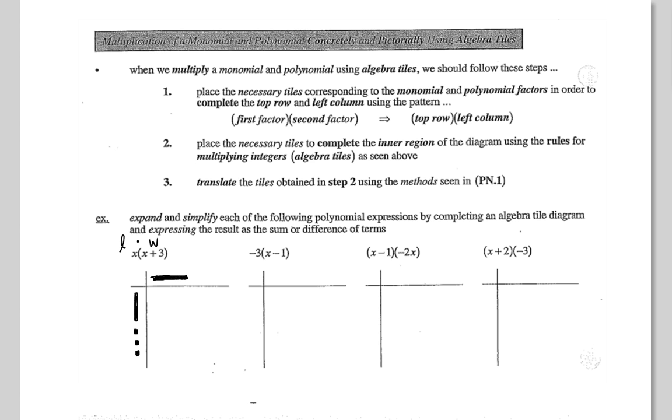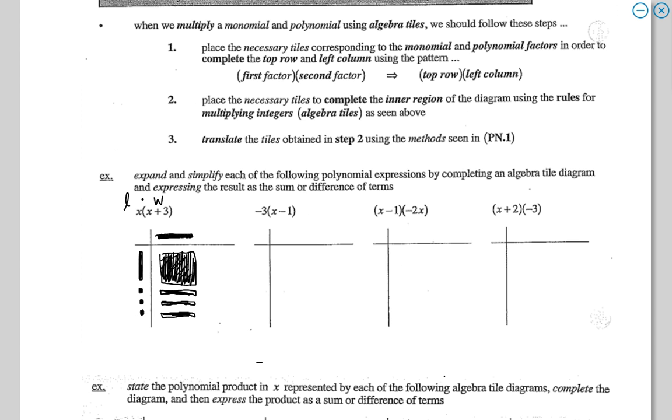Now when you go to do this multiplication, you have to go column by row, column by row, just like in your elementary grades. This case there's only one column. So what's a bar times a bar? That makes your square. And then bar times unit gives you the bar. I'll just color them because they're positive.